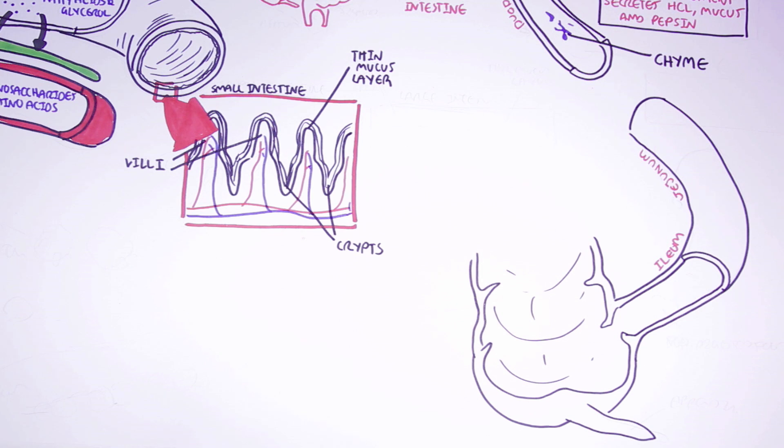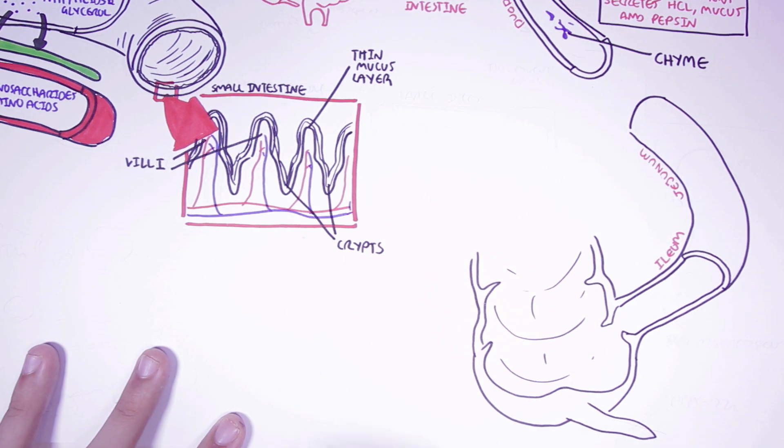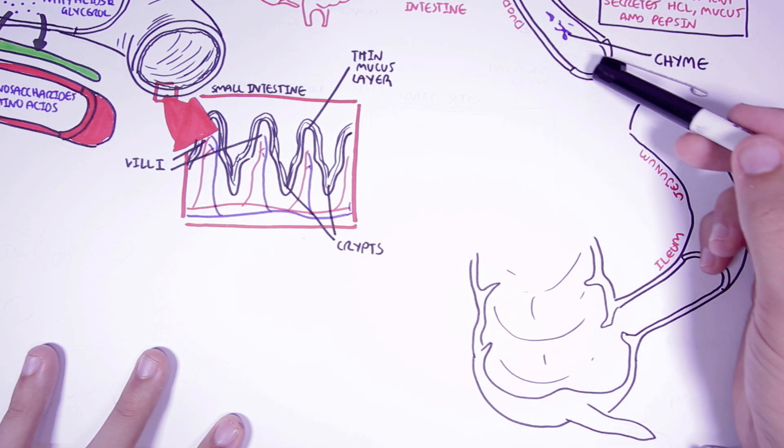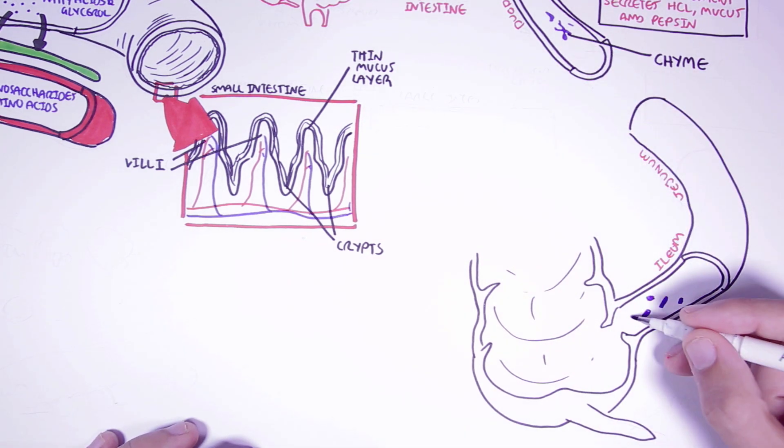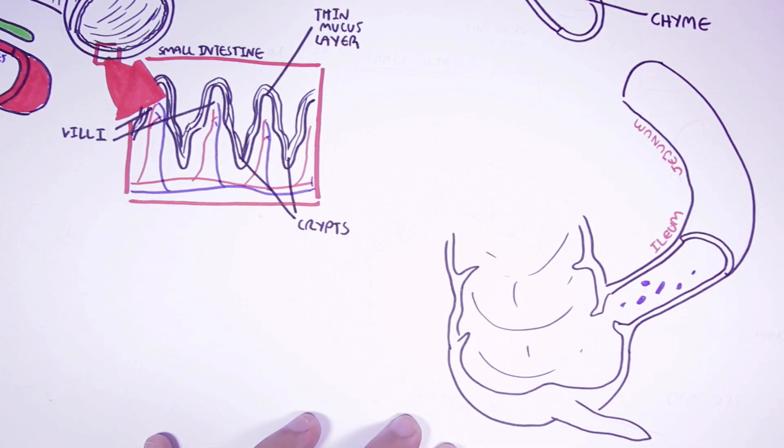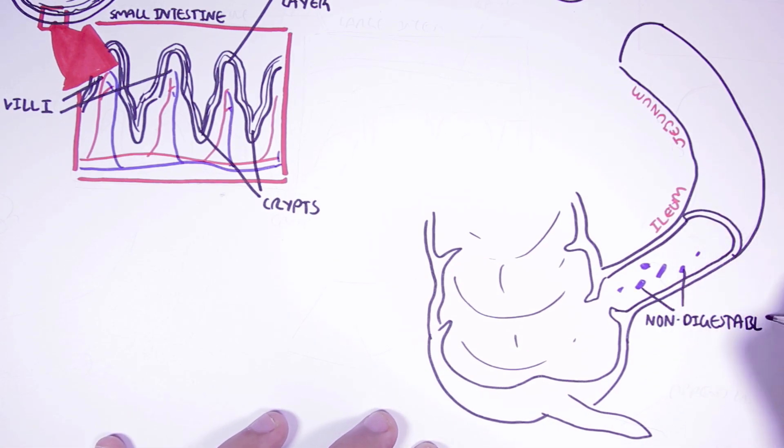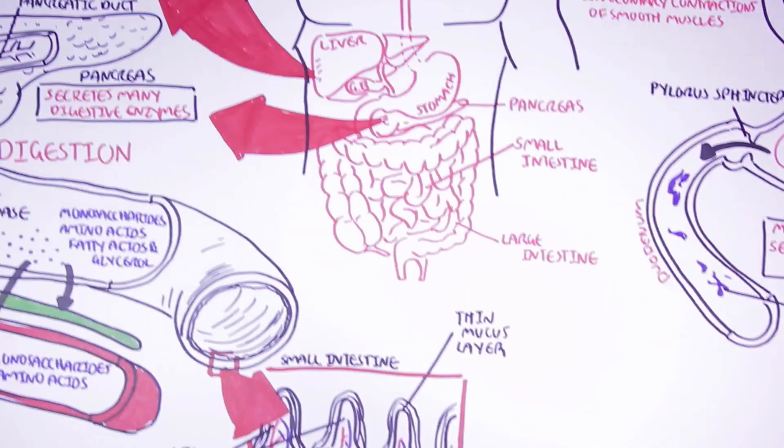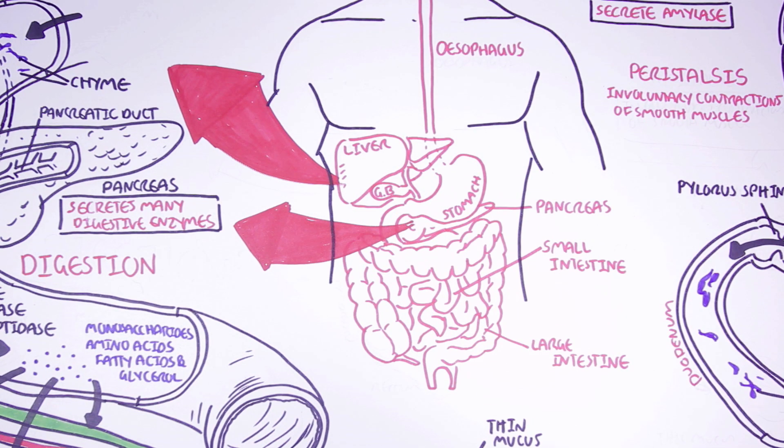But there are other things that happen within the large intestine. Because what happens is that foods that are not digested and absorbed in the small intestine, these foods will reach the colon. And so we will soon see what will happen to these non-digestible foods. But first we need to learn a bit more about the anatomy of the large intestine.